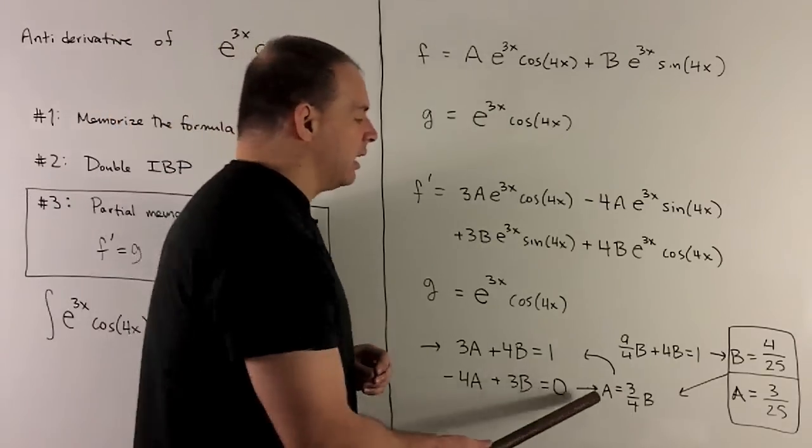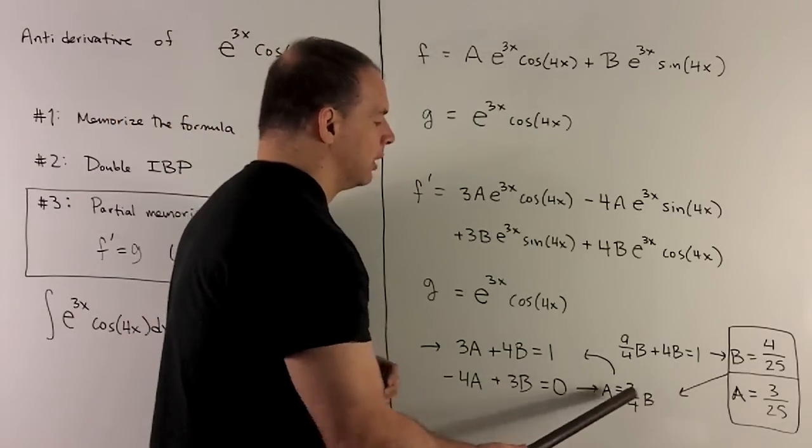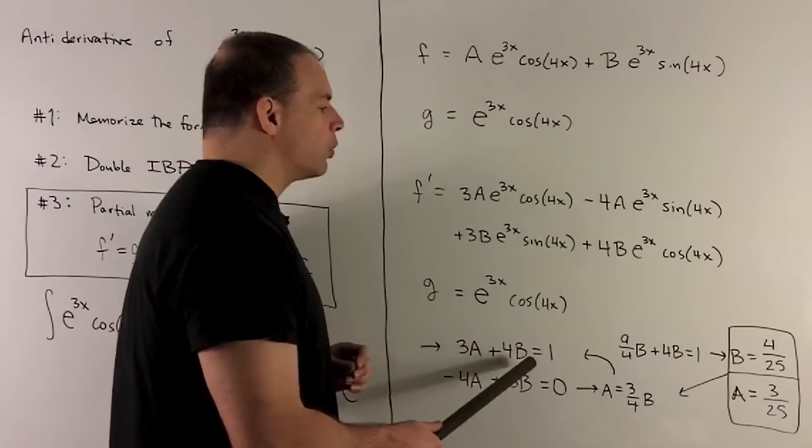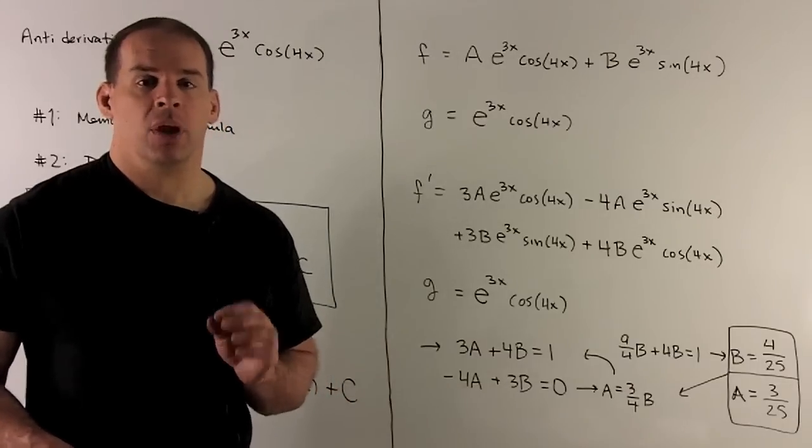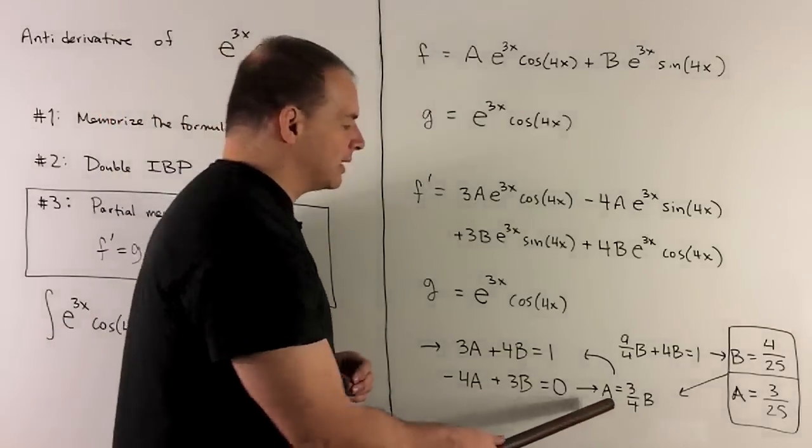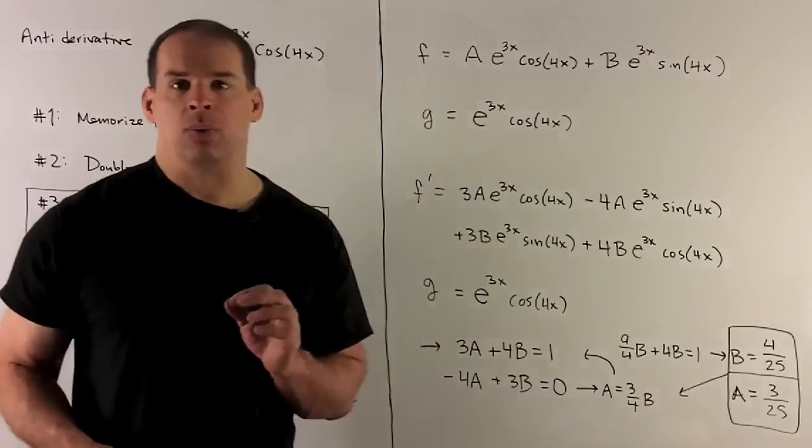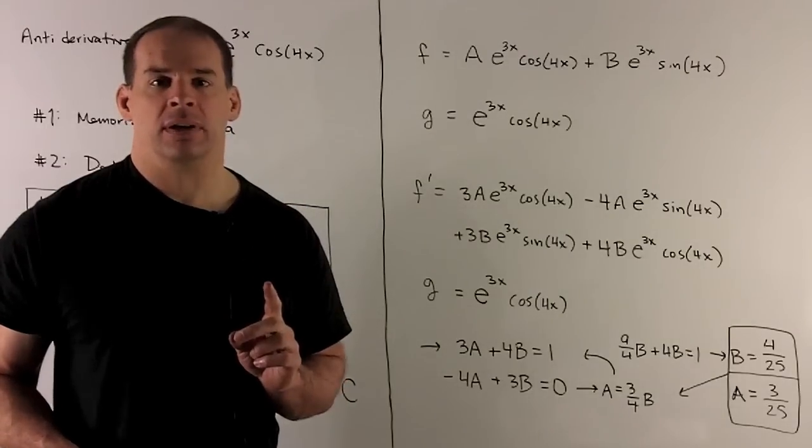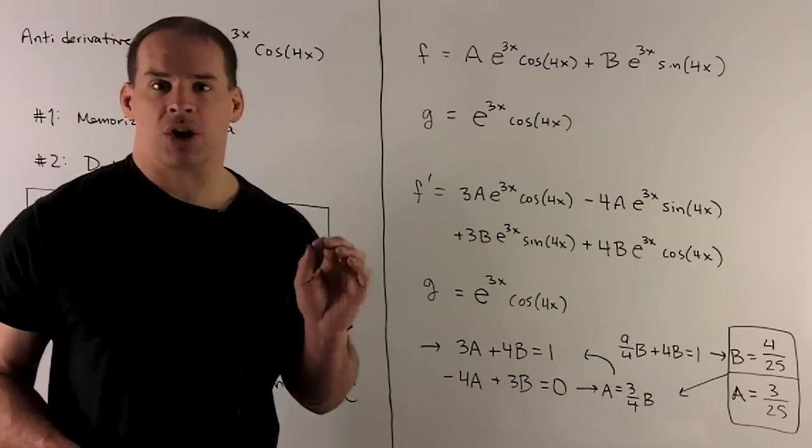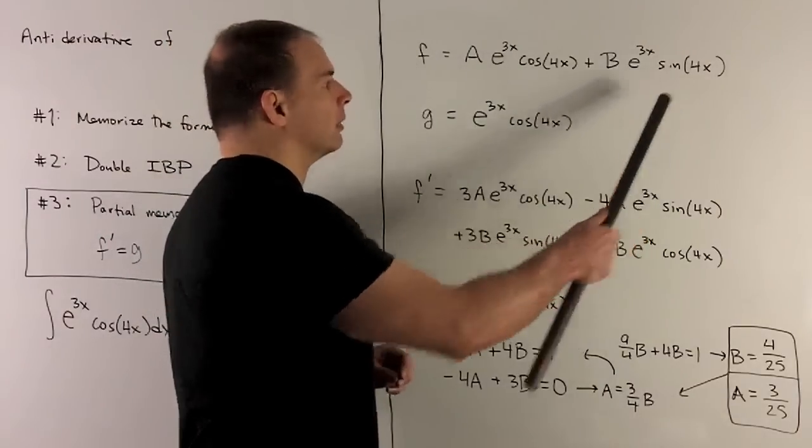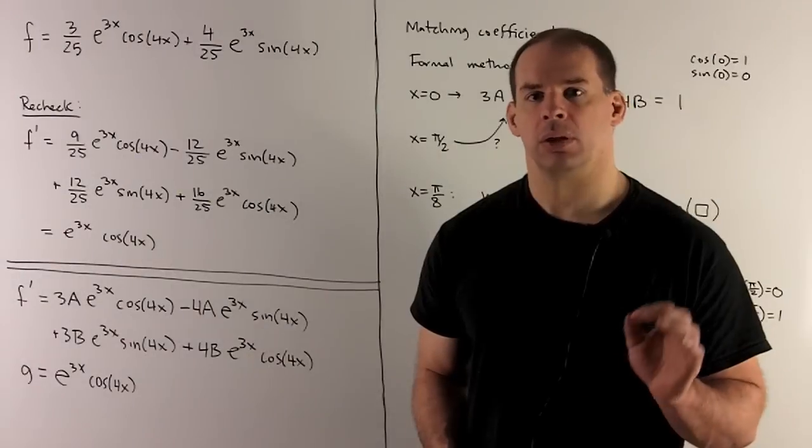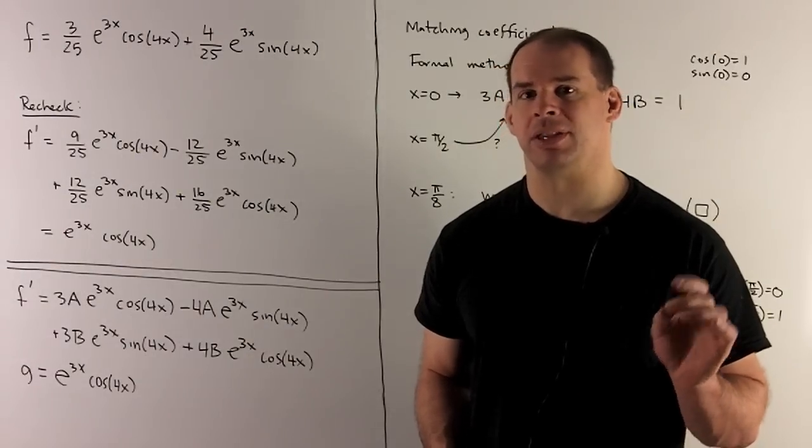First step, we'll have a equals 3 fourths b. Substitute that back into our first equation. That's going to give me b equals 4 over 25. Once we have that, we can substitute back into here. That gives me a equals 3 over 25. So, that gives us our solution. We take our a and our b, put them back into our f.